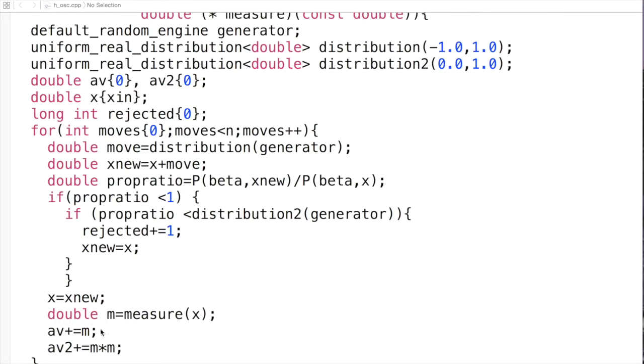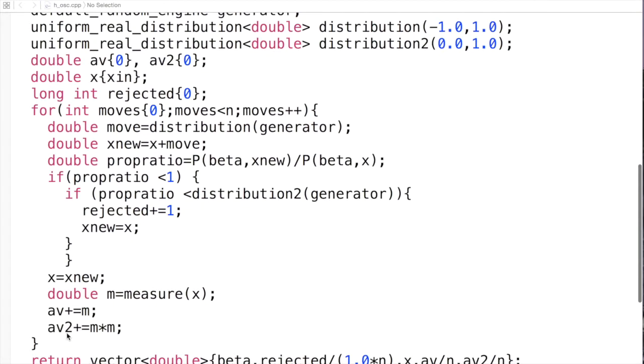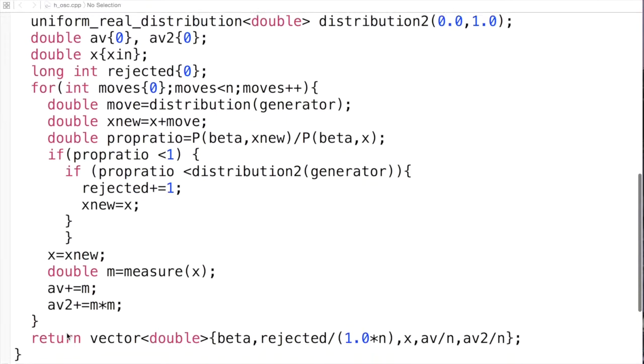We make a measurement. We add that measurement to av to get the average later on, the av squared, we add the squared to there.